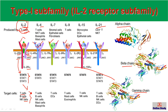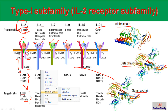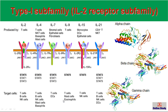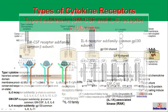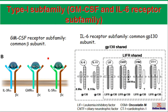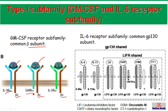Next is the granulocyte-monocyte colony-stimulating factor subfamily. In this subfamily the beta chain is common. You can see that IL-3, GM-CSF, and IL-5 all bind to specific receptors that share the common beta chain, and they also have specific subunit receptors for each of those cytokines.